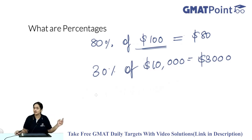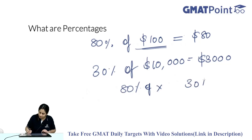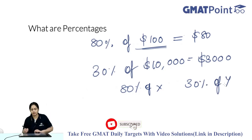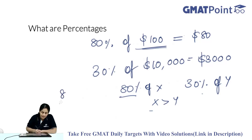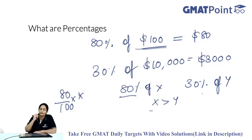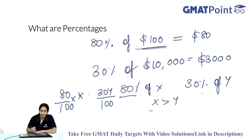You cannot compare 80% of X and 30% of Y without knowing the relationship between X and Y. In a data sufficiency question, if you are told X is greater than Y, can you answer whether 80% of X is greater than 30% of Y? Yes — because 80 is greater than 30 and X is greater than Y. Percentage 'of' essentially represents a product: 80% of X is (80/100) × X, and 30% of Y is (30/100) × Y.